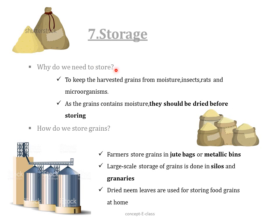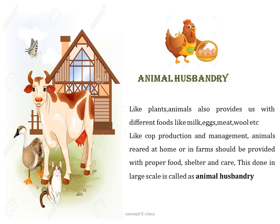The seventh and last agricultural practice is storage. We need to store harvested grains to keep them from moisture, insects, rats, and microorganisms. Since grains contain moisture, they should be dried before storing to prevent attack by insects, pests, bacteria, and fungi. Farmers store grains in jute bags or metallic bins. For large-scale storage, grains are kept in silos or granaries, where large amounts of jute bags are placed in stock inside a big store. At home, you can store food grains by putting some dried neem leaves with them.